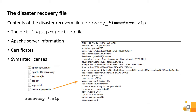By default, the file is located in Program Files, Symantec Endpoint Protection Manager, server private key backup, as a recovery timestamp zip file. If you have more than one domain ID, ensure that you copy all domain IDs to the recovery file, as only the default domain ID is originally stored.